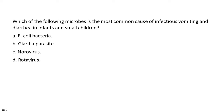Which of the following microbes is the most common cause of infectious vomiting and diarrhea in infants and small children? A. E. coli. B. Giardia parasite. C. Norovirus. D. Rotavirus.